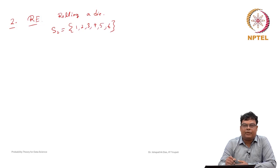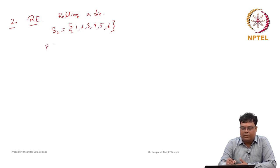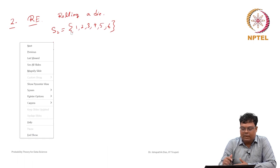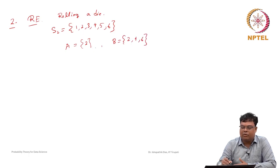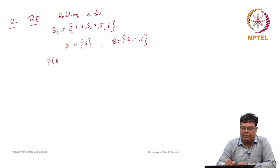Suppose in the other room someone is rolling a die and there is no other information. Consider the event A: '2 is observed on the top face'. There is no information, so any of the observations can come with the assumption that all the faces are equally likely — by symmetry, the probability will be 1 by 6. So probability of A will be 1 by 6, by the classical approach.